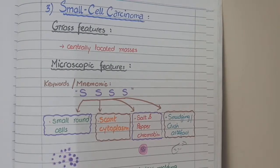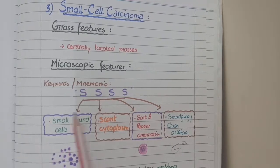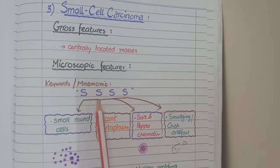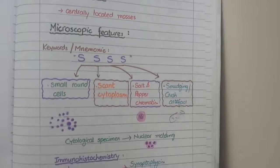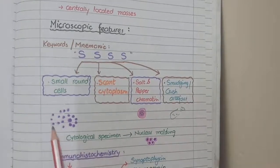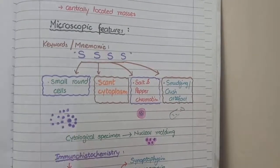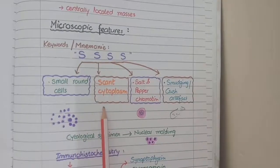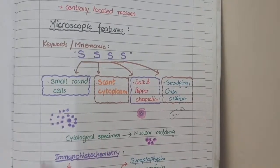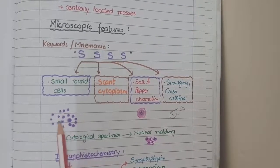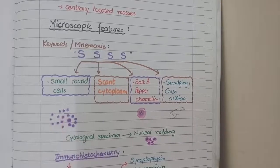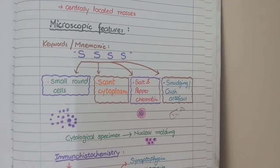For microscopic features of small cell carcinoma, there is a mnemonic using four S letters. The first S indicates small round cells. The second S indicates scant cytoplasm — the quantity of cytoplasm is very less, so the cells appear as if they are made up of nucleus only. The third S indicates salt and pepper chromatin, which means at high magnification you will see a granular pattern of chromatin in the nucleus.